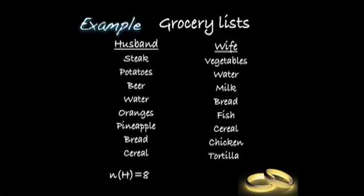Consider another example where both a husband and wife create a grocery list. They may have some of the same items, or they may have all different items. In this example, the husband is requesting steak, potatoes, beer, water, oranges, pineapple, bread, and cereal. The wife has written down that she would like vegetables, water, milk, bread, fish, cereal, chicken, and tortillas. There are eight items on the husband's list and eight items on the wife's list.